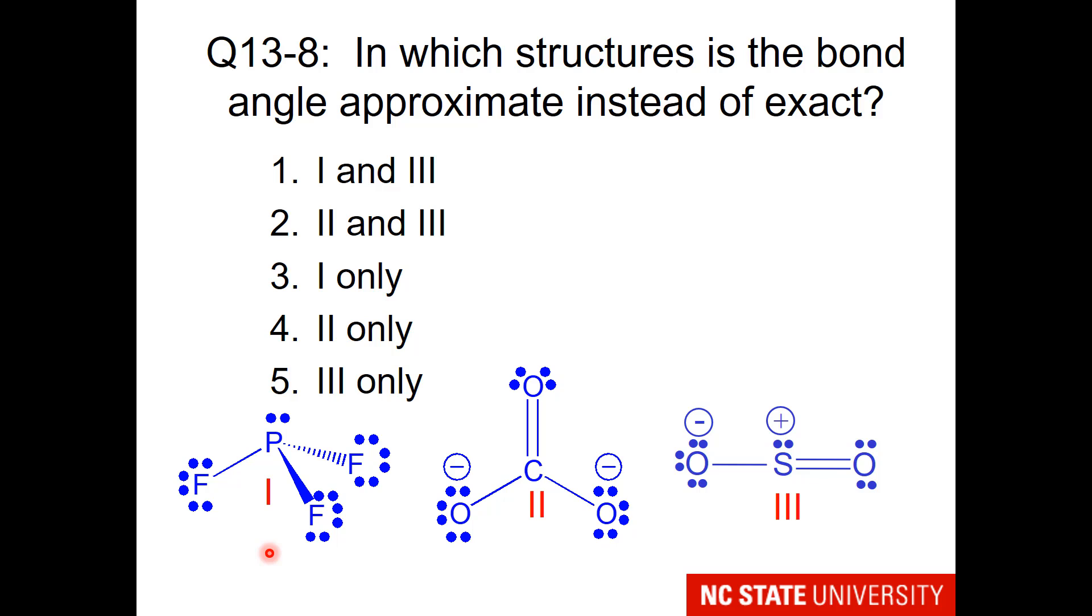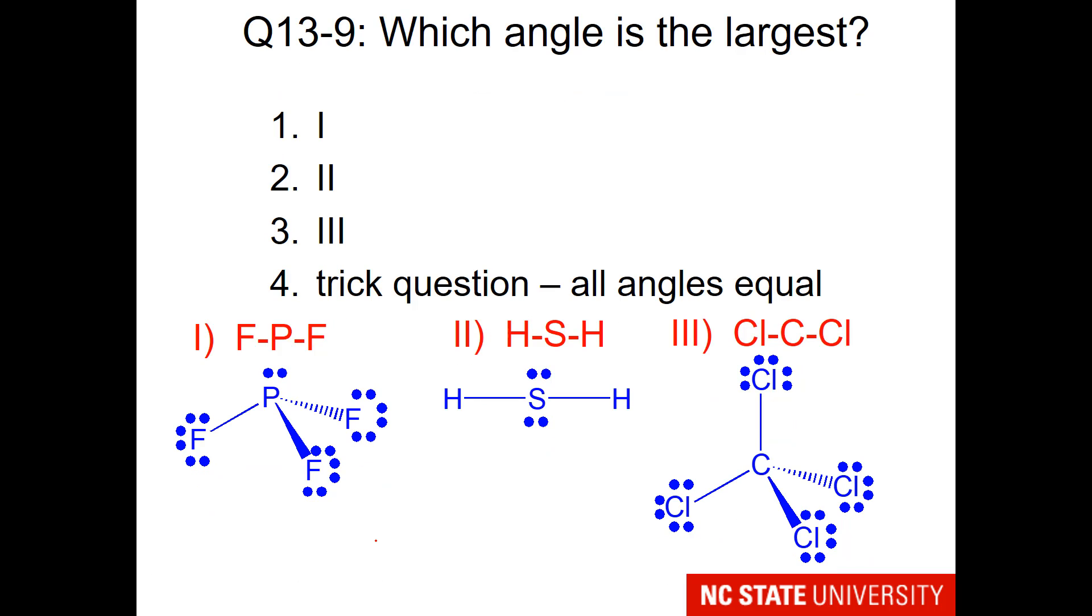Here's more of a challenge question. In which structures is the bond angle approximate instead of exact? Remember that approximate means that there are lone pairs on the center, because that's what causes the angle to deviate from ideal and crunch down. Here is another somewhat tricky question. And I will help you by telling you four is not the answer. While you're thinking about this, remember lone pairs are large and tend to crunch the angles down.